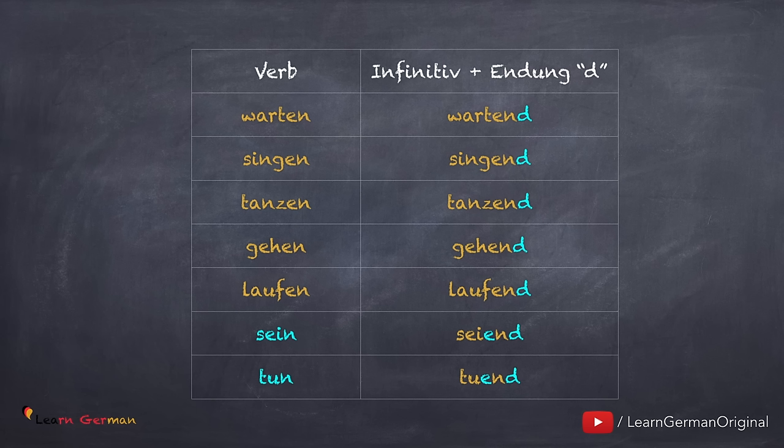Es gibt aber zwei Ausnahmen: Sein → Seiend, Tun → Tuend. Hier kommt ein E in die Mitte.